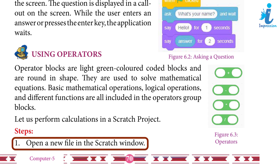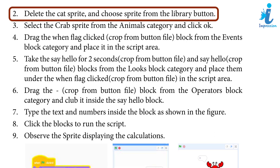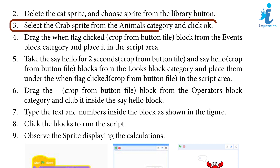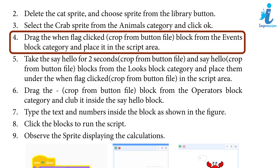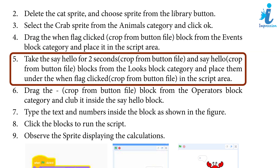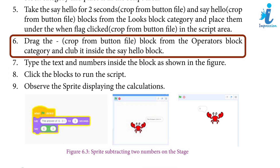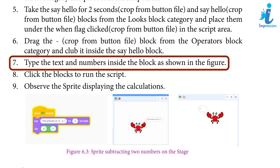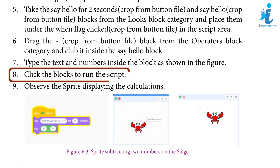Steps to perform calculations: One, open a new file in the Scratch window. Two, delete the cat sprite and choose a sprite from the library. Three, select the Crab sprite from the Animals category and click OK. Four, drag the 'When Flag Clicked' block from the Events block category into the script area. Five, take the 'Say Hello for 2 seconds' and 'Say Hello' blocks from the Looks category and place them under the 'When Flag Clicked' block. Six, drag the operator block and plug it inside the 'Say Hello' block. Seven, type the text and numbers inside the block as shown.